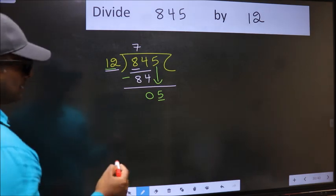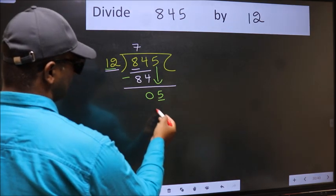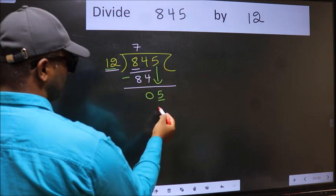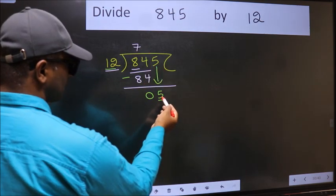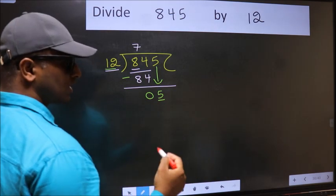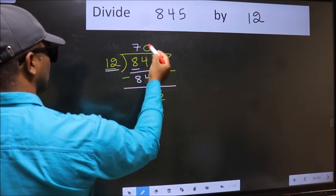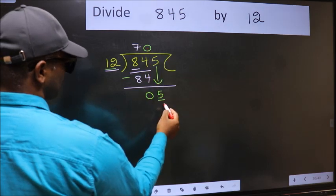Instead, what you should think of doing is: which number should we take here? If I take 1, we will get 12. But 12 is larger than 5. So what we should do is we should take 0. So 12 into 0 is 0.